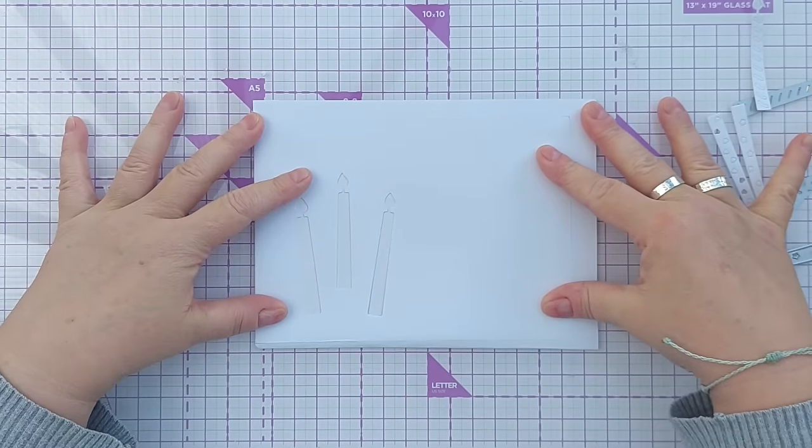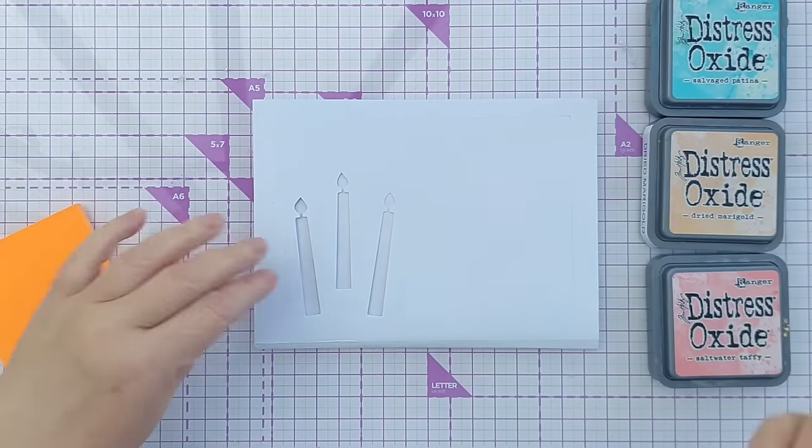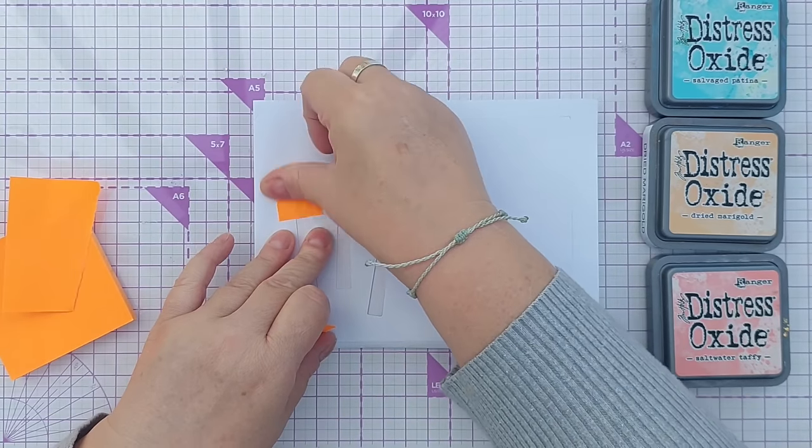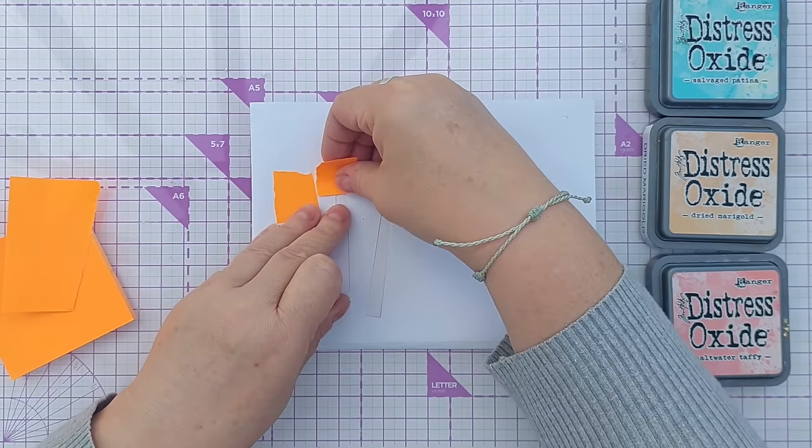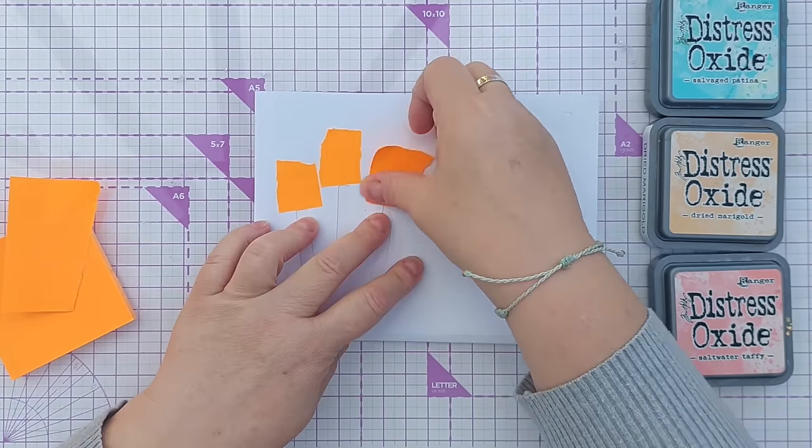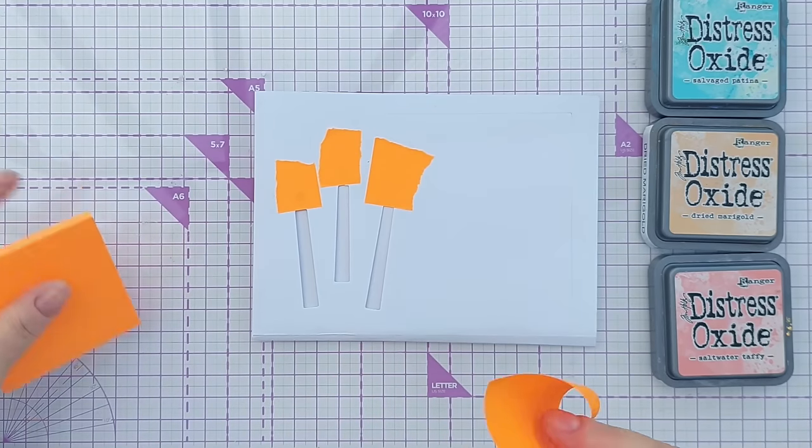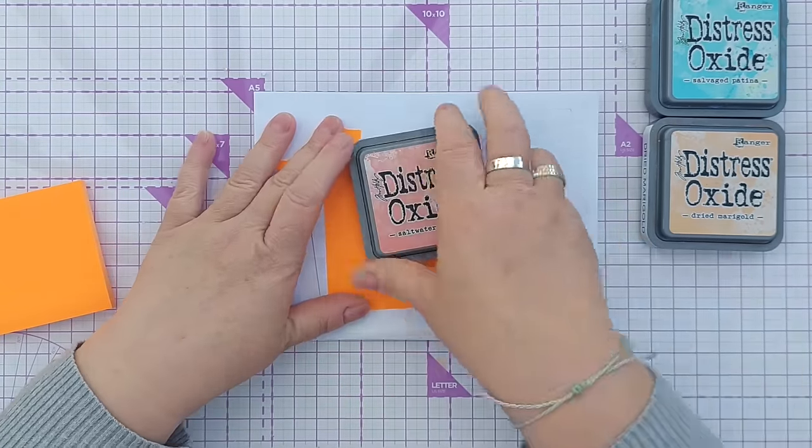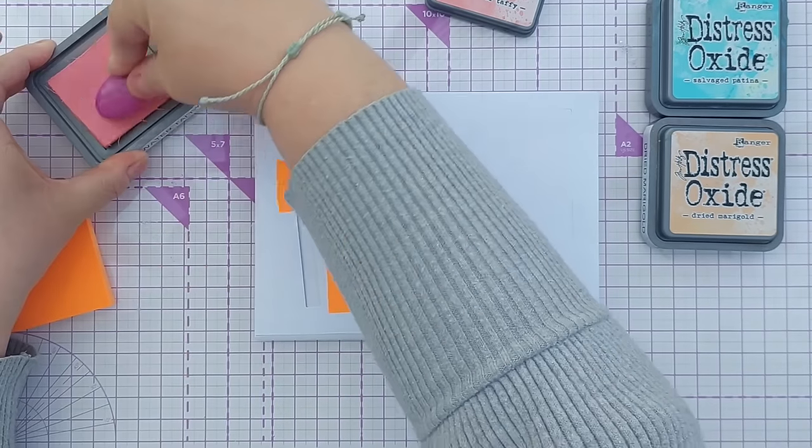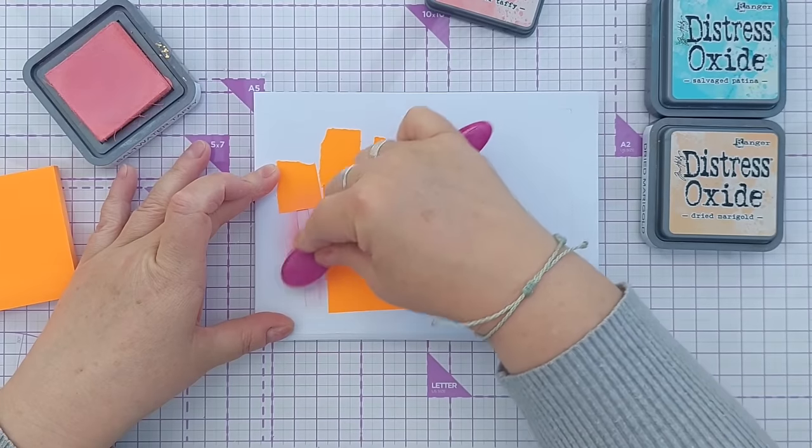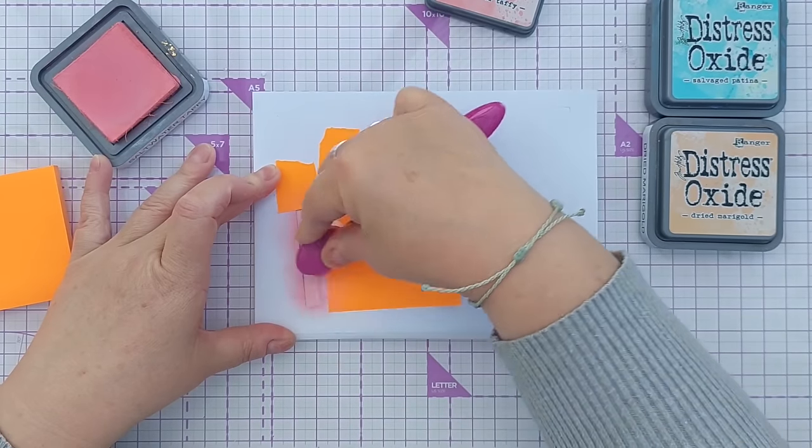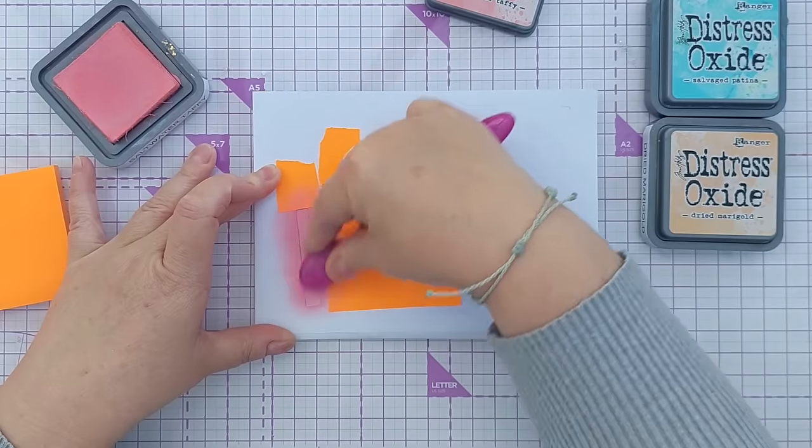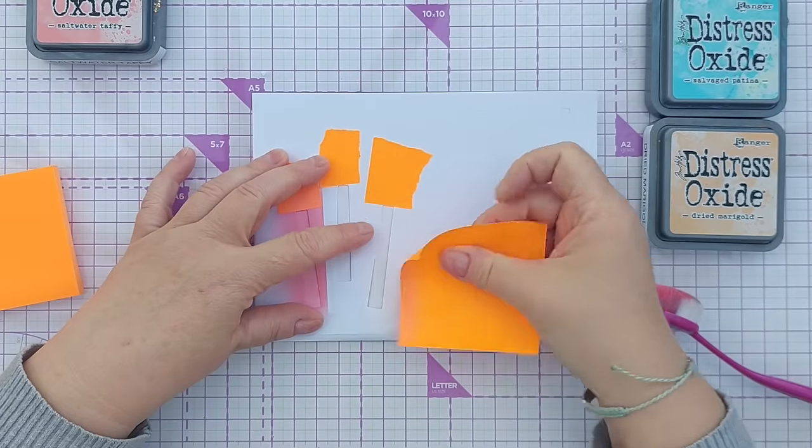So there are my candles ready for stenciling. What I want to do first is mask off the flames. I don't want to color those in the first round. I'm going to save that for later. Then I'm going to mask off those two candles there so I can work on this one, and I'm going to color this with saltwater taffy and just blend a nice layer through my stencil.